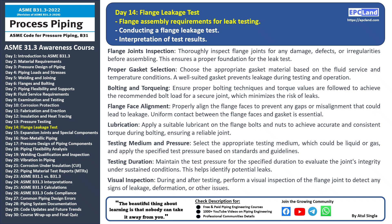Flange face alignment: accurate alignment of flange faces is important to create a uniform sealing surface — misalignment can lead to uneven pressure distribution and potential leaks. Lubrication: apply lubrication to the flange bolts and nuts before torquing to achieve accurate and consistent bolt loading. Testing medium and pressure: select the appropriate testing medium (liquid or gas) and apply the specified test pressure according to industry standards.